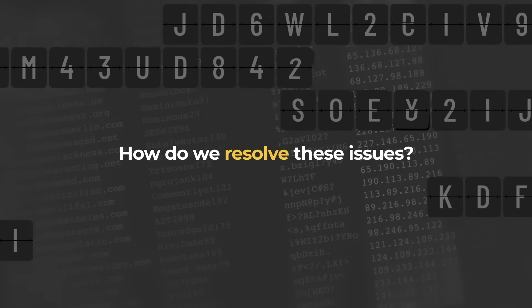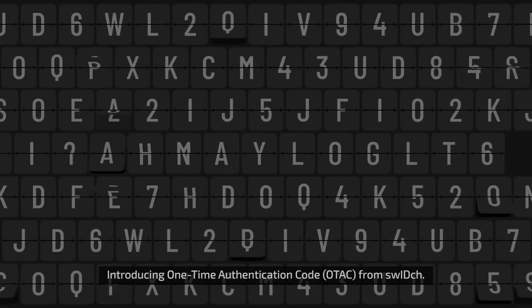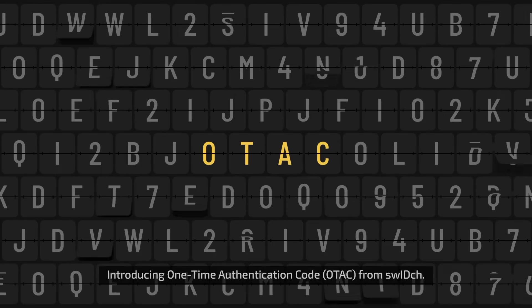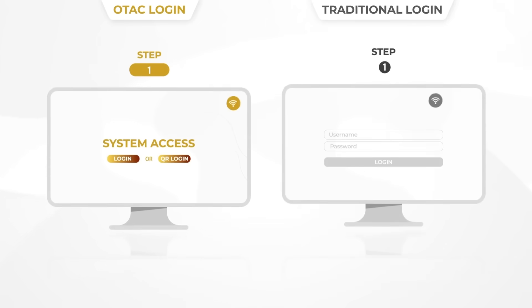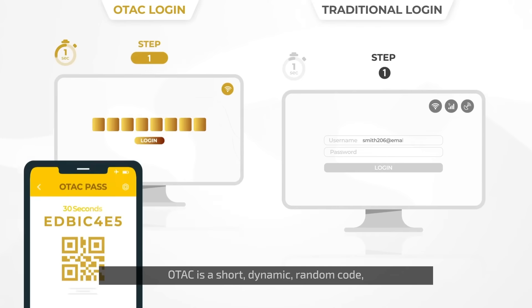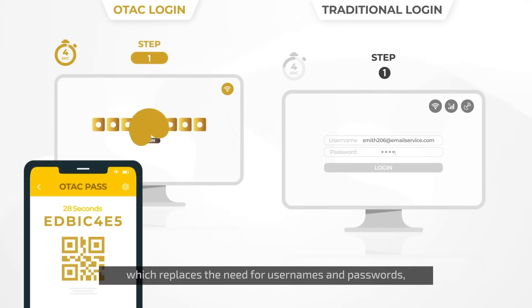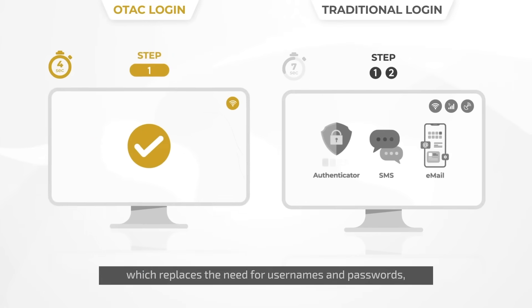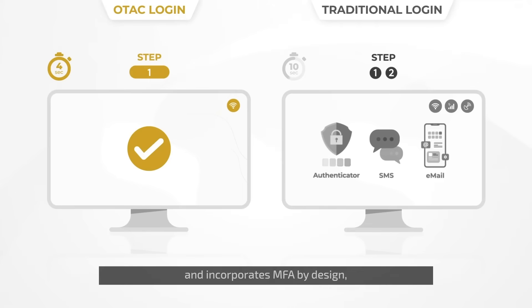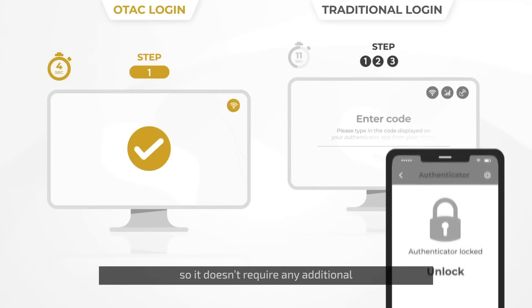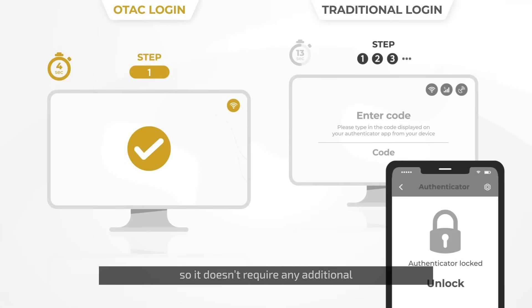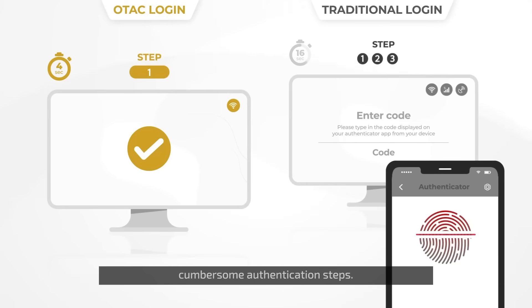So, how do we resolve these issues? Introducing one-time authentication code from Switch. OTEC is a short dynamic random code, usually 8 characters long, which replaces the need for usernames and passwords and incorporates MFA by design, so it doesn't require any additional cumbersome authentication steps.